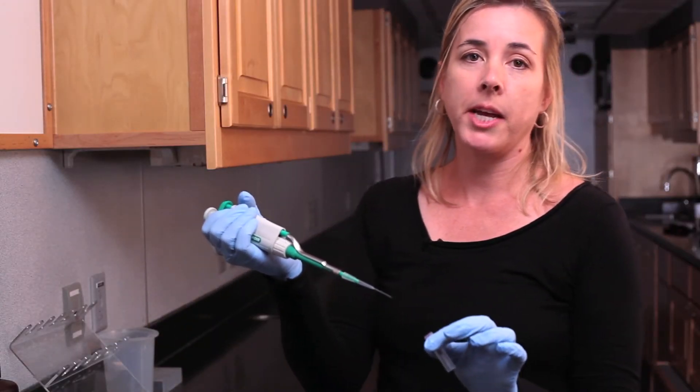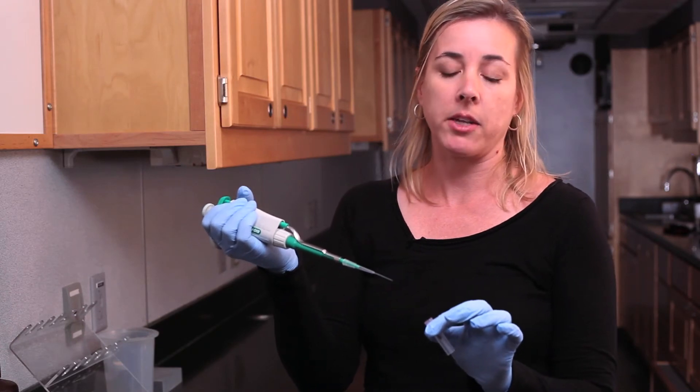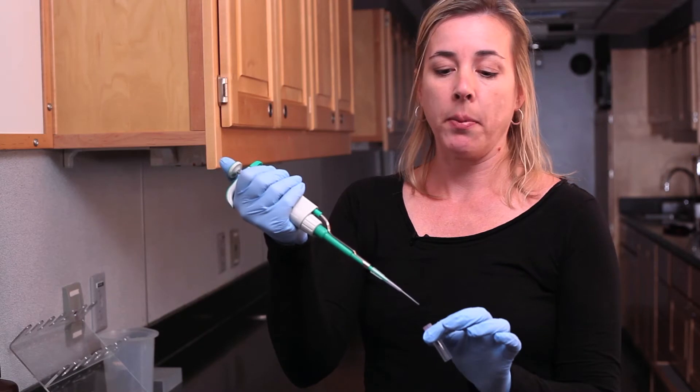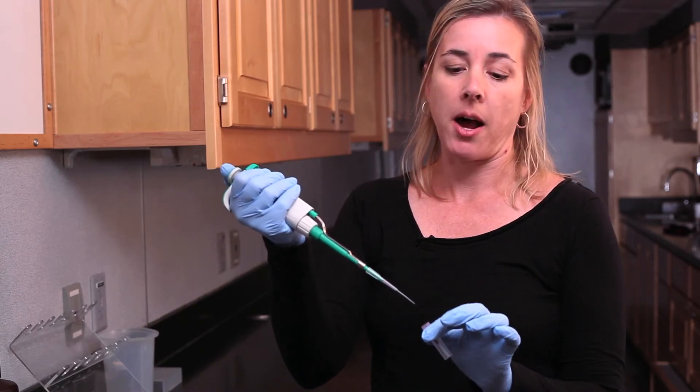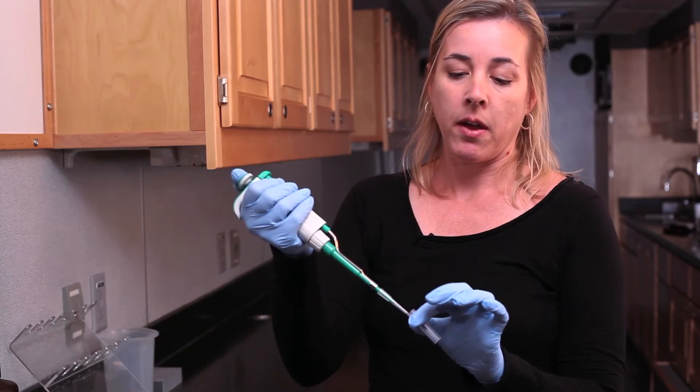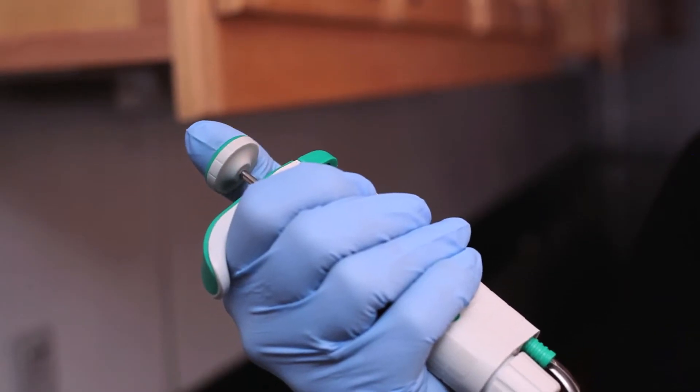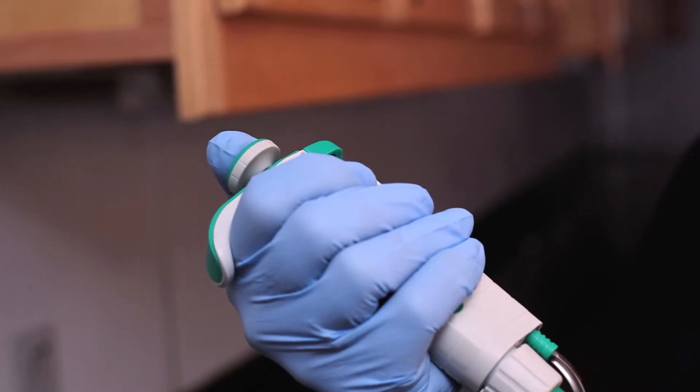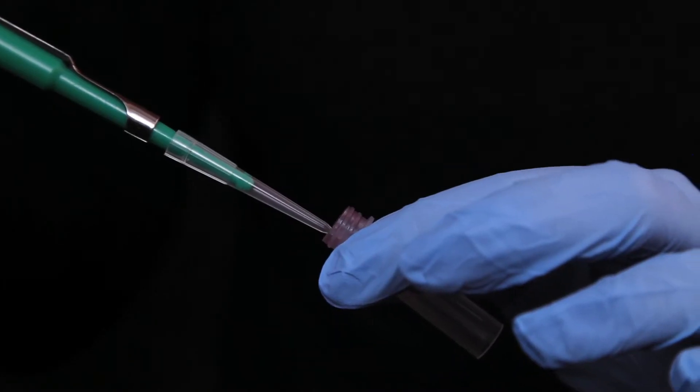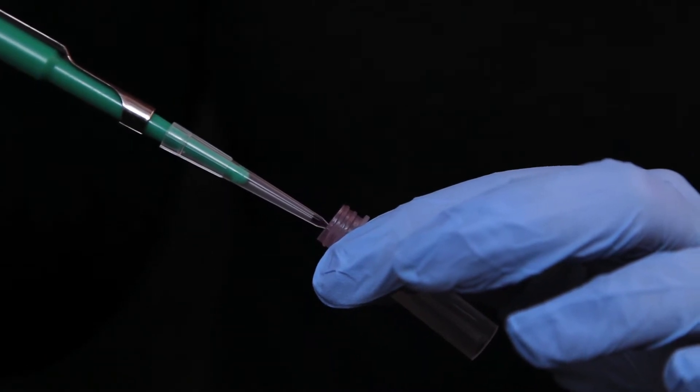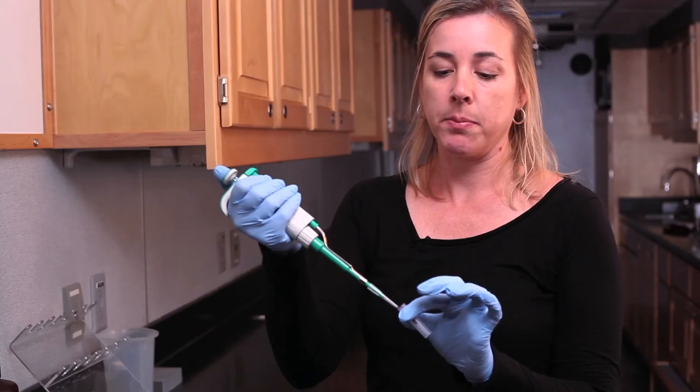Before we load our sample onto our gel, it's important that we mix our sample. So I'm going to take my thumb, place it on the plunger, and press down to the first stop. Then I'm going to enter my sample and release my thumb to collect the sample, but then I'm going to press back down to the first stop. And I'm going to do this several times, just moving back and forth between the first stop and the release to mix my sample.